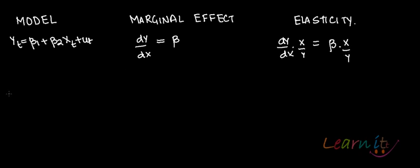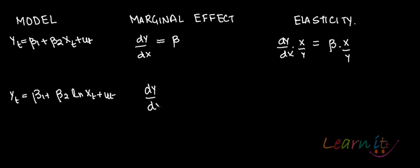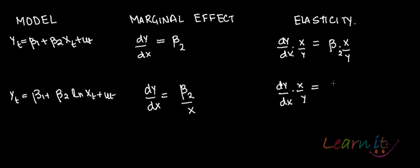Now suppose you have the other model: yt = β1 + β2*log(xt) + ut. You want to find out the marginal effect, which is dy/dx — this should be β2/x. And elasticity is (dy/dx) * (x/y), which is β2/y.